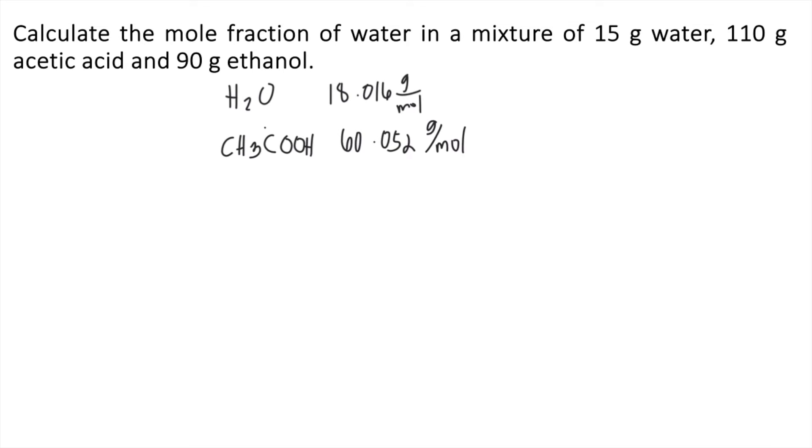Lastly, we have ethanol. The chemical formula of ethanol is C2H6O, and the molar mass of ethanol is 46.08 grams per mole.